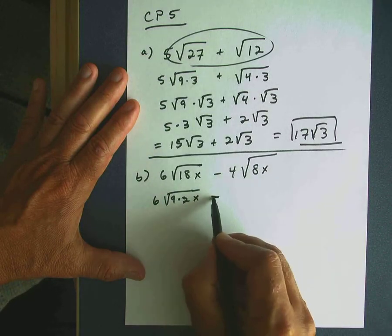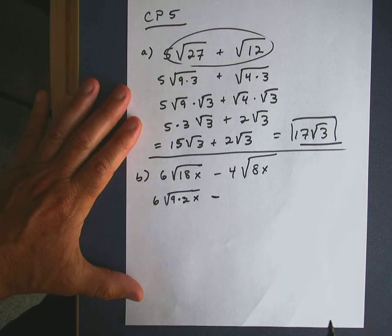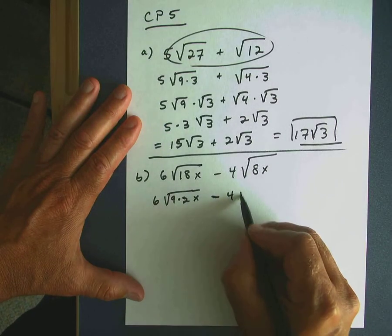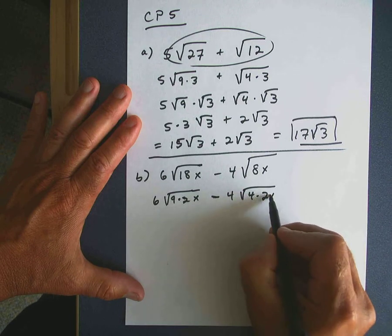And 8, if you look at that, 8, the square root of 8x is not simplified, because we can find a factor of 8 that we can take the square root of, and that number is 4. So let's rewrite this as 4 times 2x.